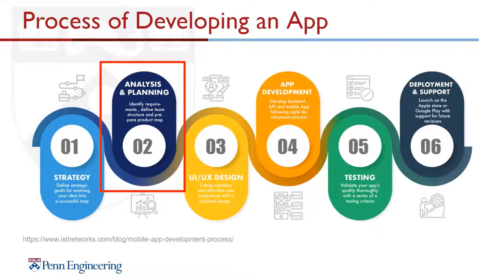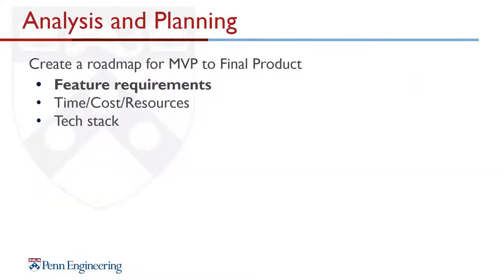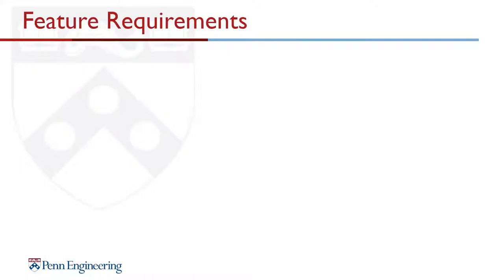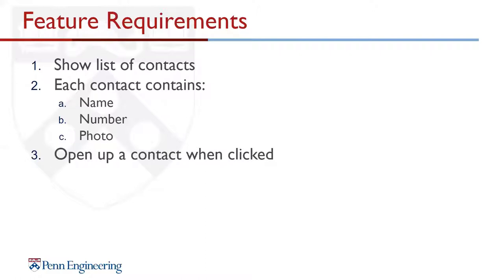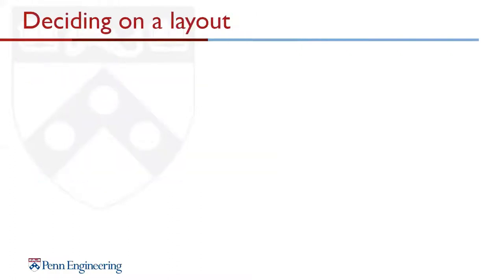So let's plan this contacts app. As part of developing an app we have to do analysis and planning, which includes thinking about feature requirements. First, we want to show a list of contacts, and each contact should have a name, phone number, and a picture. When we click on a contact we want it to open up to a full page view with more details, and finally we want to be able to create new contacts.